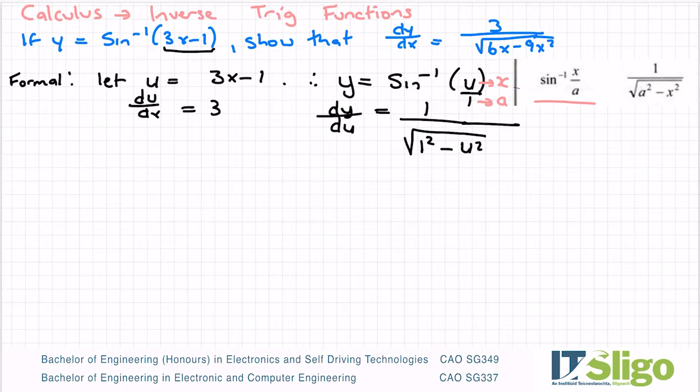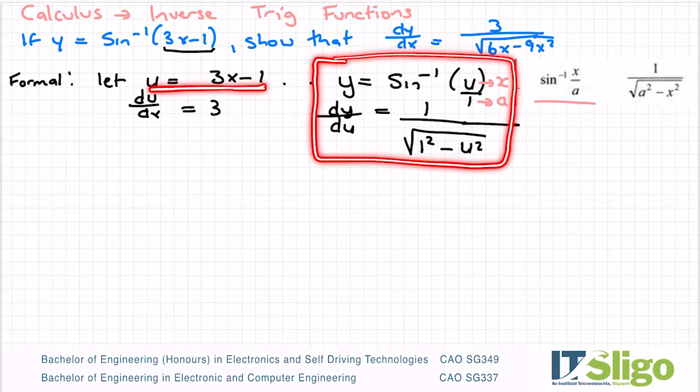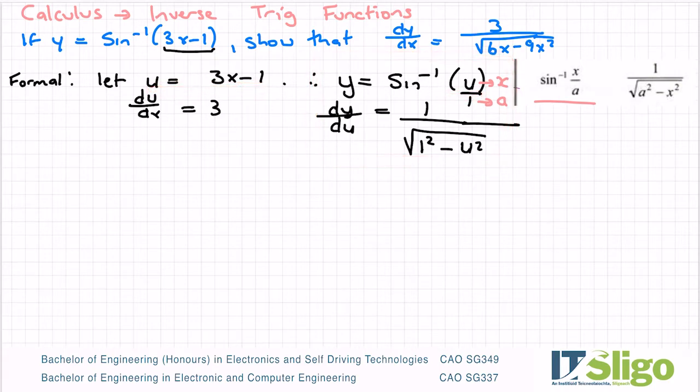So what have I done there? I have let the inner function take on the letter u just to simplify it. I've then rewritten my equation in terms of u, and I've differentiated it. And then also my inner function, which I let be u, I've also differentiated it. So I'm differentiating the equation u, so that's why it's du, and the letter I'm differentiating with respect to is x. So du/dx.